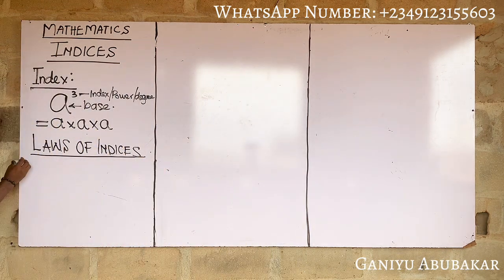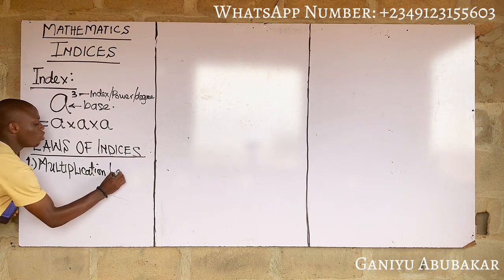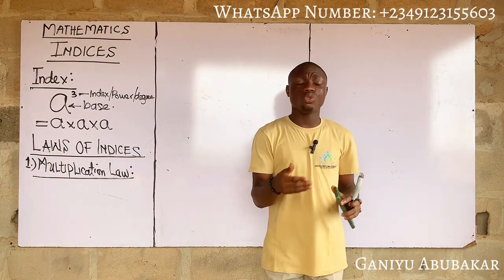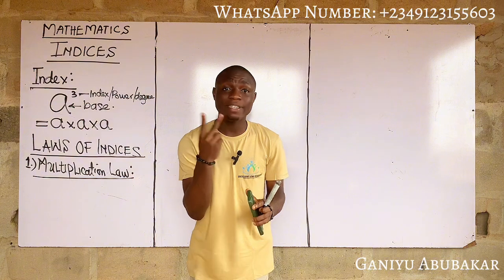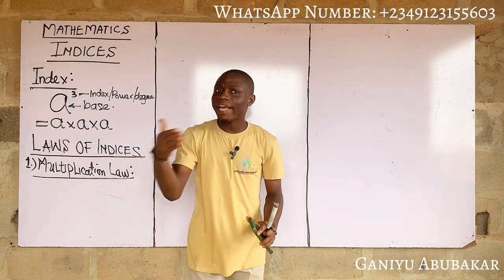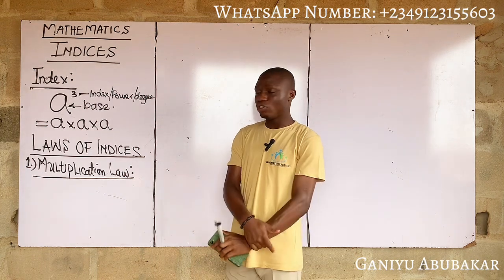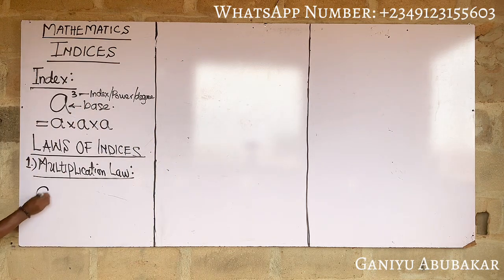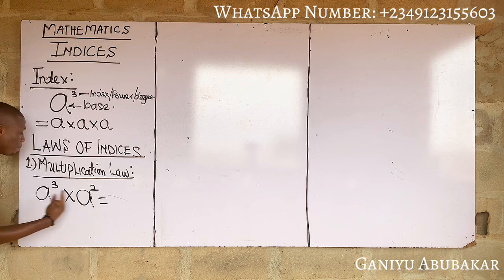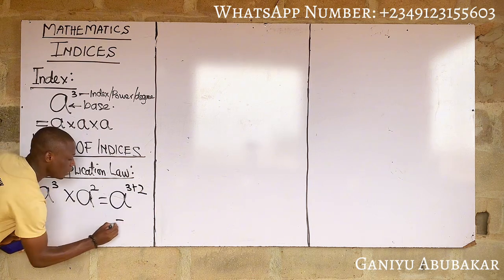The first law is the Multiplication Law. When like bases — that is, the same bases — are multiplying, simply add their powers. For example, if I have a³ multiplied by a², when like bases are multiplying simply add their powers: that becomes a to the power 3 + 2, which gives a to the power 5.